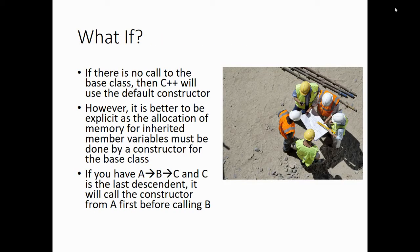If there's no call to the base class, C++ will try to help by calling a default constructor. However, it's better to be explicit, as the allocation of memory for member variables must be done by the constructor of the base class. If we have dynamic memory — which we'll get to in the next section — things get all kinds of messy.